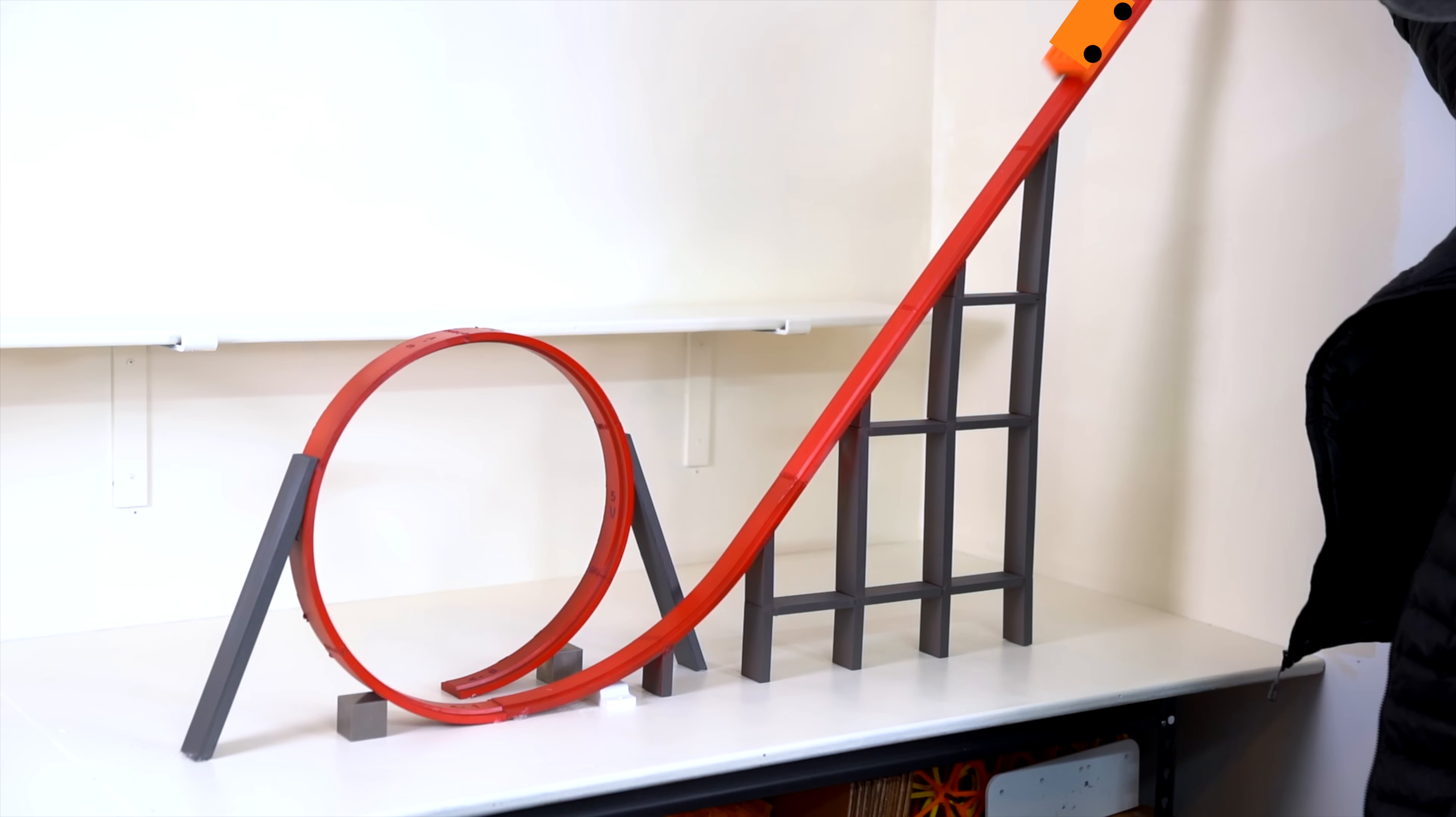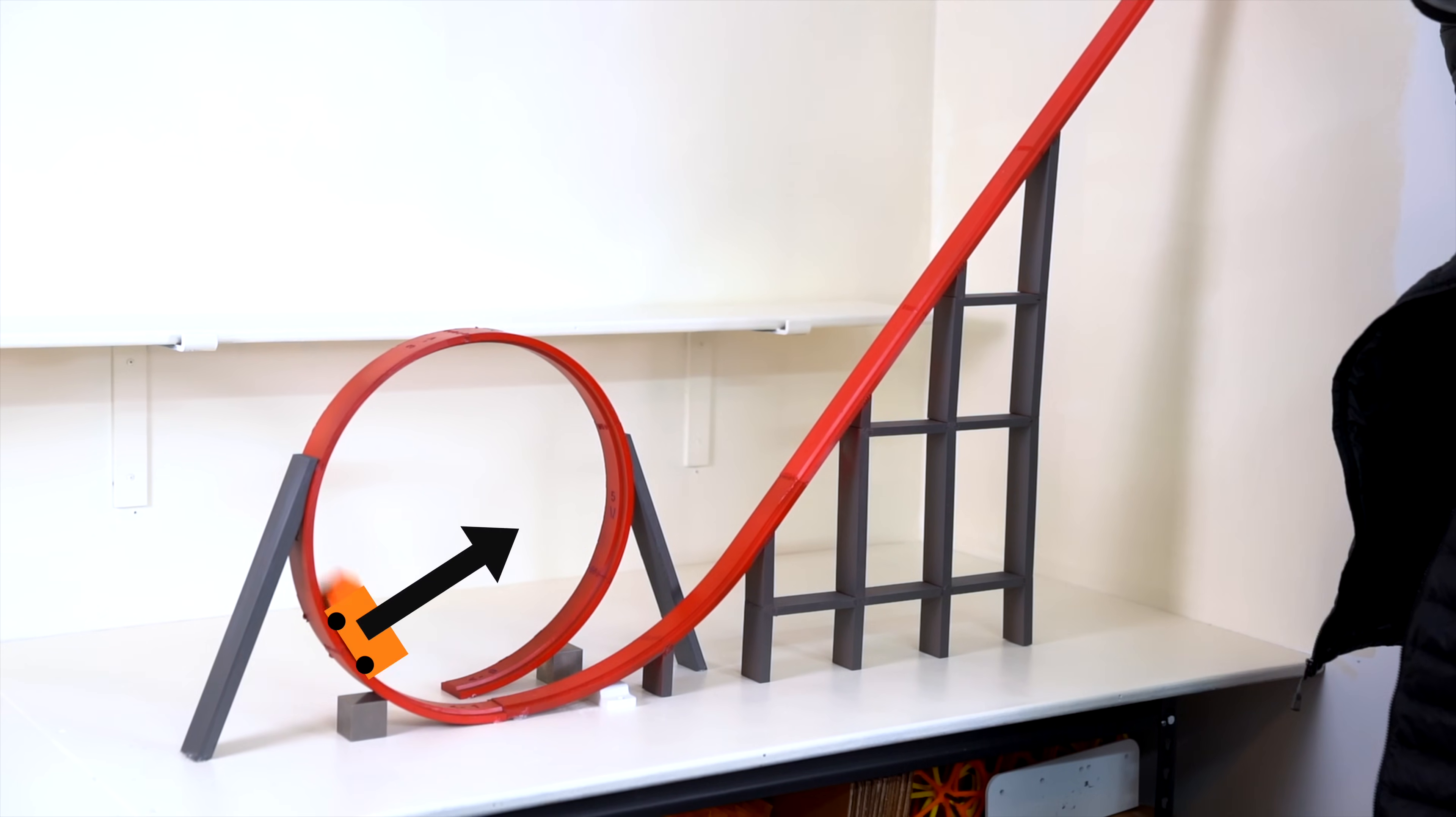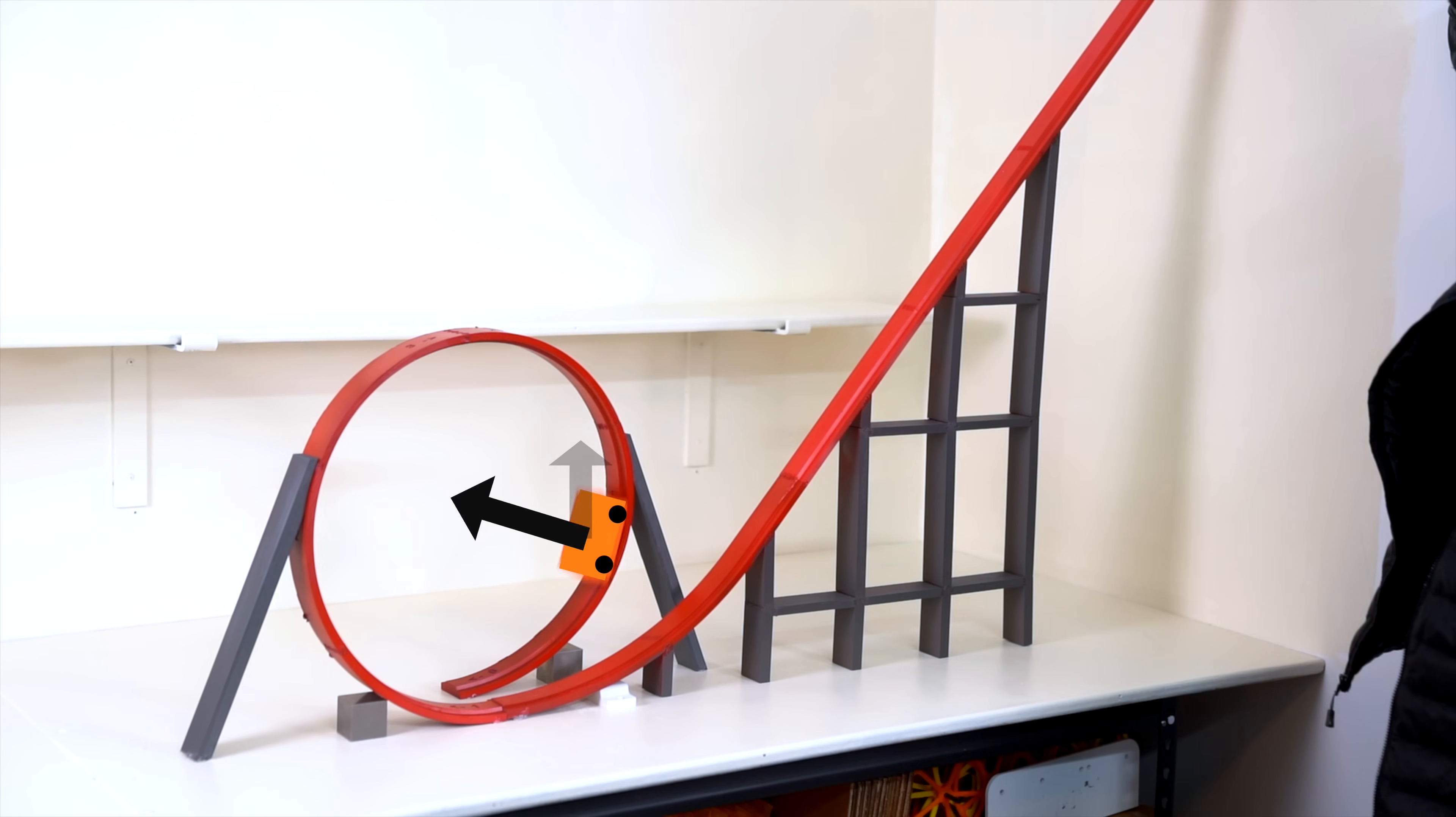Here we can see the formula in action with a constant radius loop. When our speed is fast the force is strong, and at the top where the speed is slower the force is weaker. We also have to resist gravity which is adding even more force.